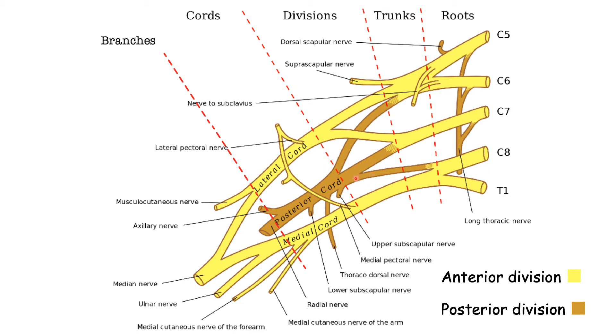And these divisions are going to give rise to cords. So we have the lateral cord, the posterior cord and the medial cord. If we have a look here at the posterior cord, it is going to be formed by the posterior division of each trunk. So the superior, middle and inferior trunks are going to give a posterior division that are going to form the posterior cord.